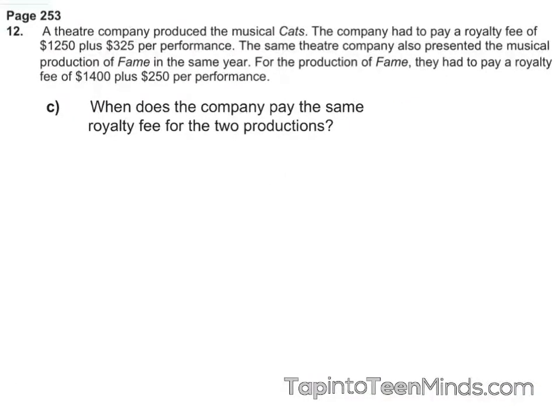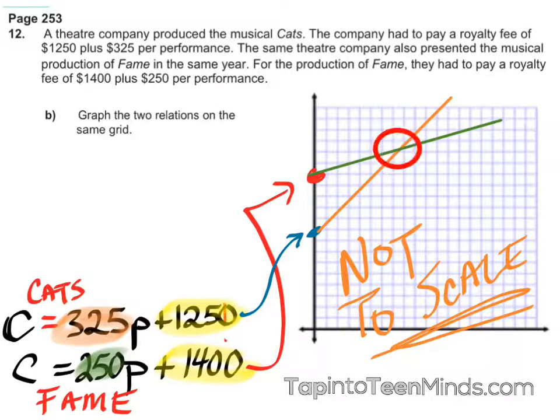Let's take a peek at part C. It says: when does the company pay the same royalty fee for the two productions? What would I have to do to find that information? So we aren't going to graph it here, but keeping in mind that it will always occur where they intersect. We don't have a graph to scale, so I don't have that exact value right now, but wherever they intersect, that will be when they cost the same amount.